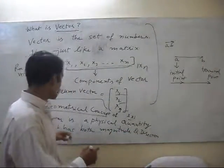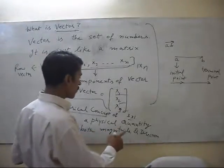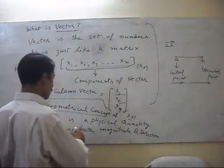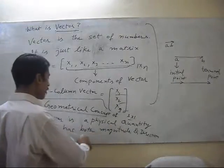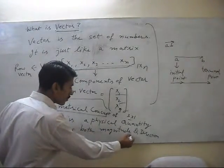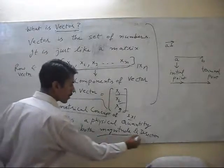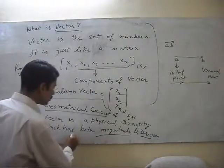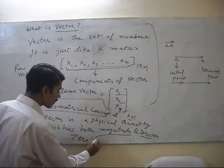If only magnitude but not direction, it means vector is nothing but it is the physical quantity which has both magnitude and direction. If only magnitude but not direction, it will be zero vector.